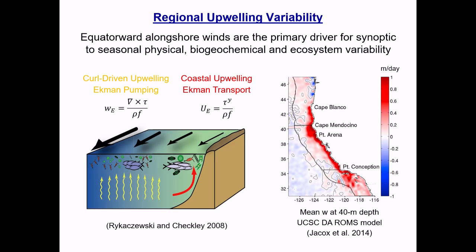These are vertical velocities at the base of the mixed layer from the model we run at UC Santa Cruz. You can clearly see the region of coastal upwelling with velocities about a meter per day, but that's a very narrow zone near the coast. Then this broader region shows curl-driven upwelling with velocities about an order of magnitude less, but happening over a broader area.